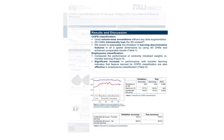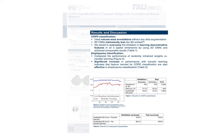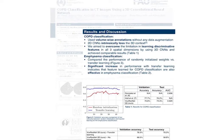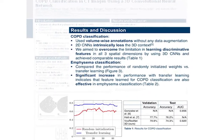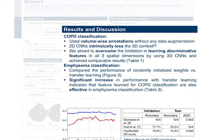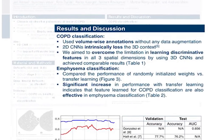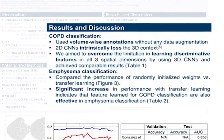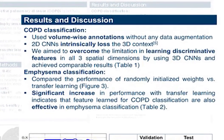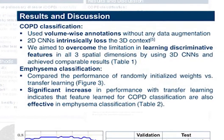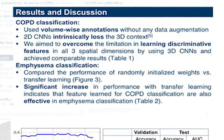We modified the network by adding a fully connected layer and training it using cross-entropy loss. For COPD classification, we used 6000 samples for training and 300 samples for testing. Our data was volume-wise annotated and we did not use any data augmentation.